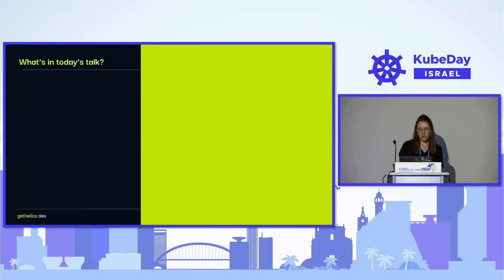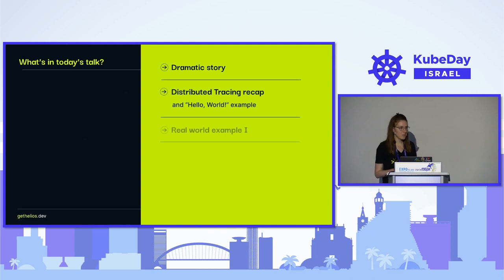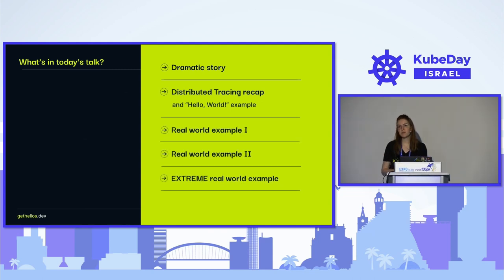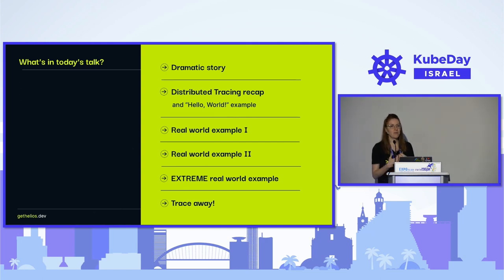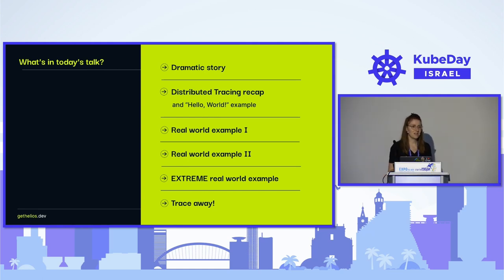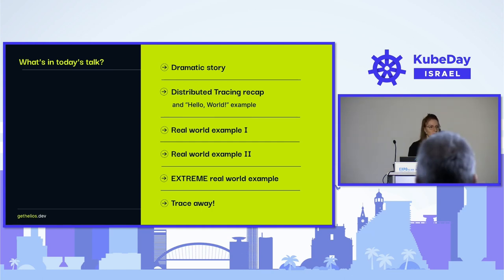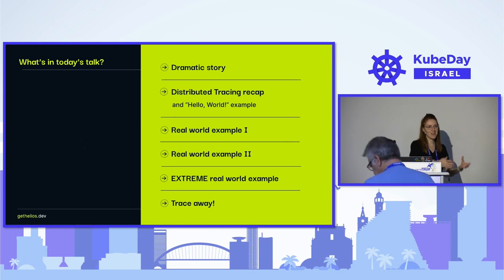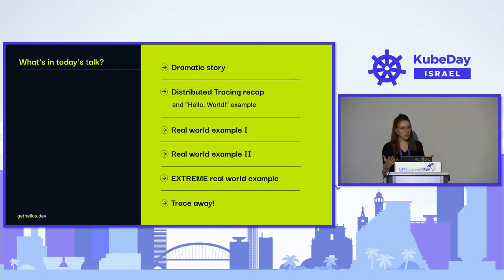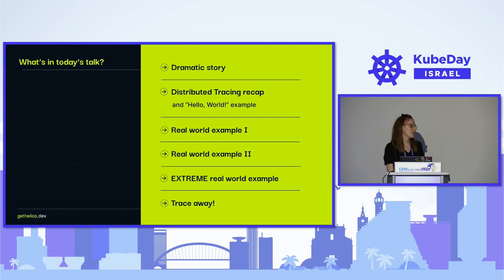Today I'll talk about distributed tracing and its implementation in OpenTelemetry. I'll start with some basic examples and move on to more complex examples that hopefully will help you understand how to properly do that. I found that getting-started examples are often lacking and leave developers wondering how to take that and apply it to a more complex system. I'll end with a real-world example.